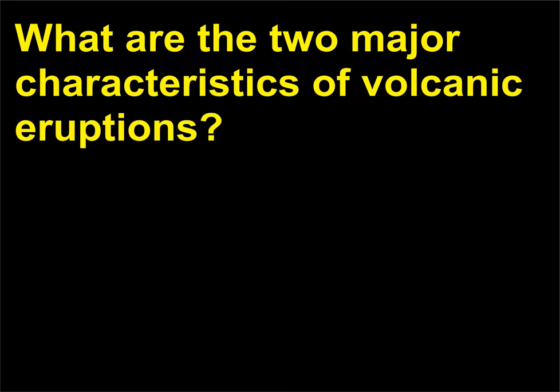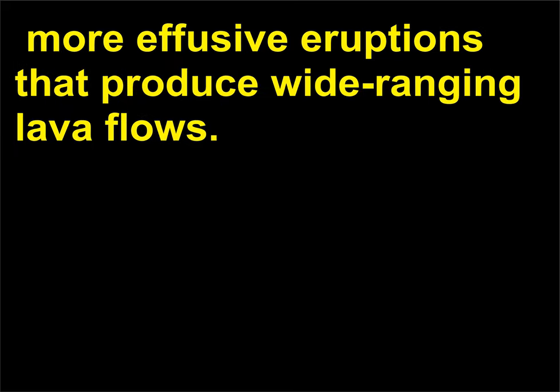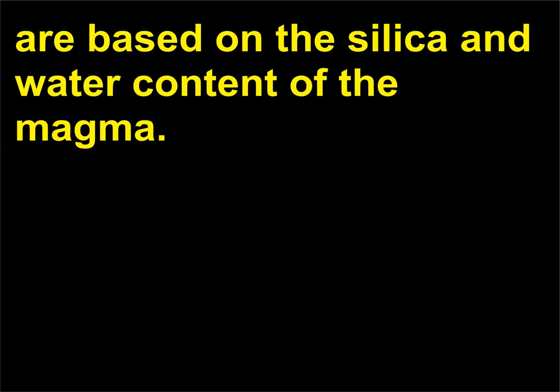What are the two major characteristics of volcanic eruptions? A volcano can experience violent eruptions or less explosive, more effusive eruptions that produce wide-ranging lava flows. In general, the eruptive characteristics of a volcano are based on the silica and water content of the magma.